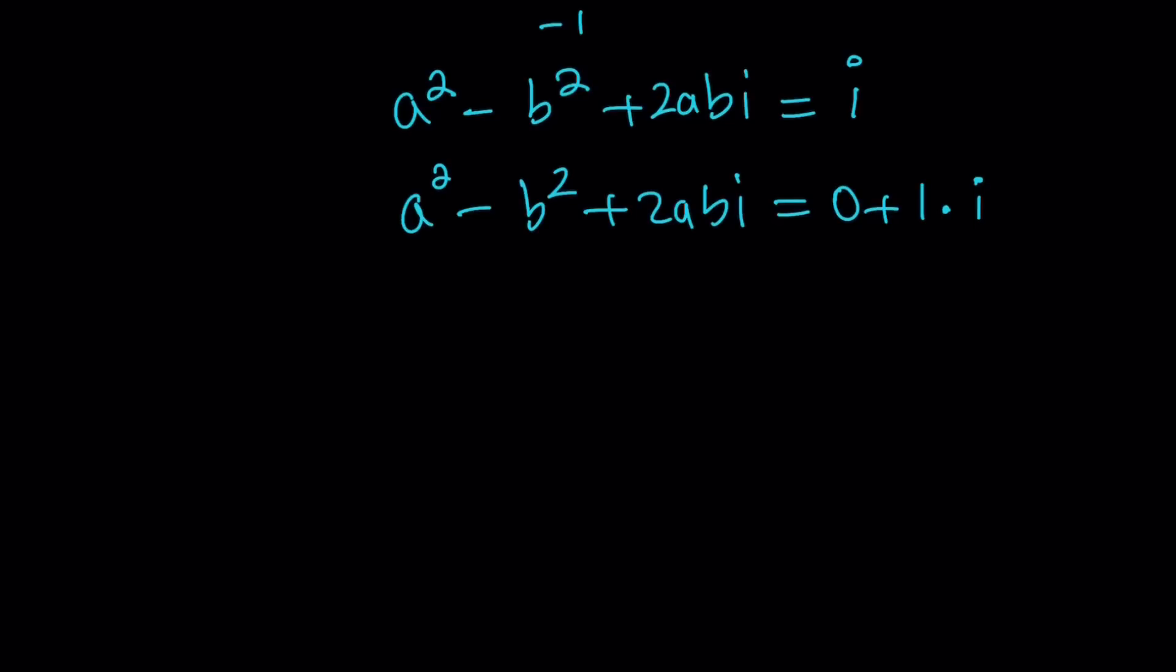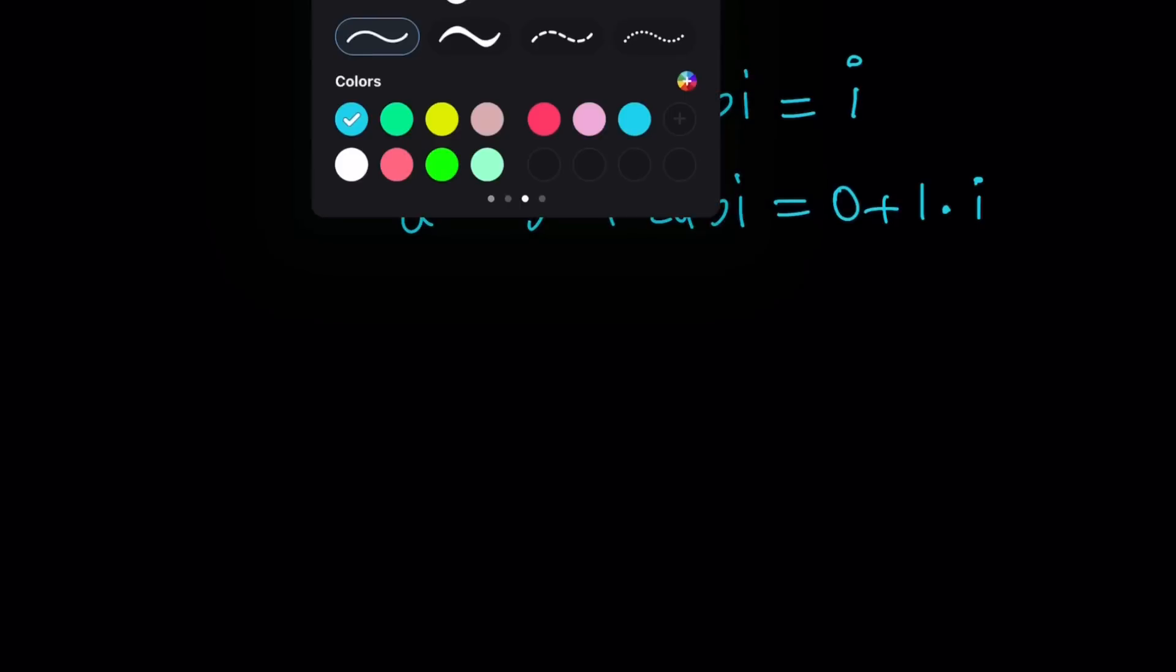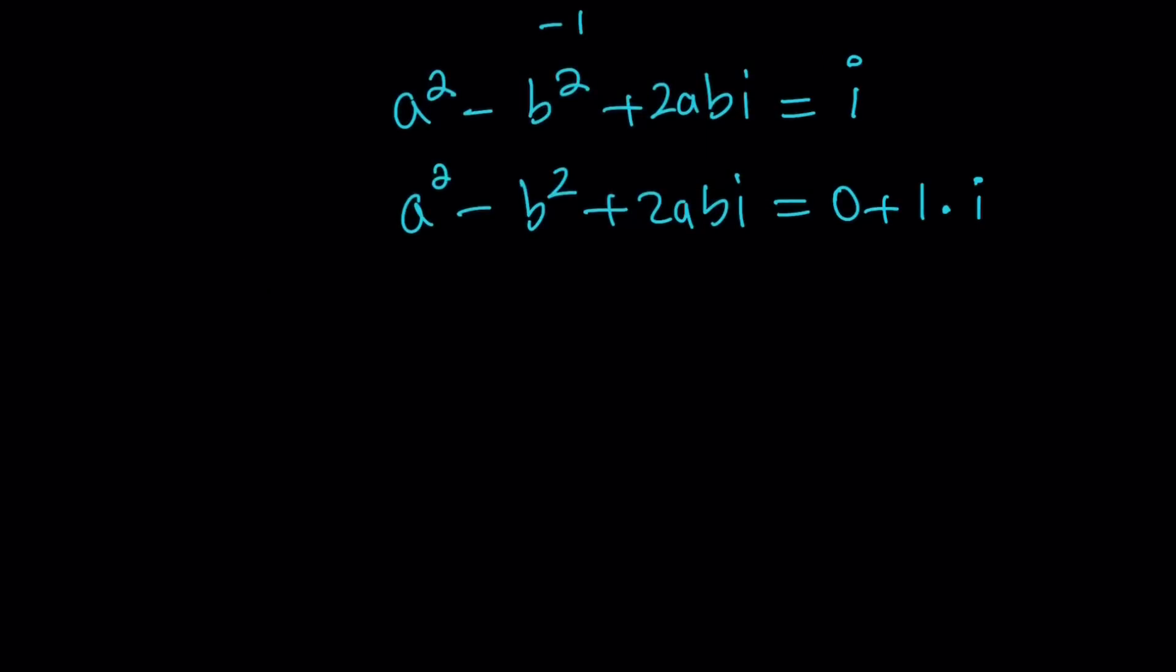It only has an imaginary part. But having compared these two numbers, we do know that if two complex numbers are equal, if they're identical, then the real parts have to equal each other and their imaginary parts have to equal each other. In other words, this is supposed to equal 0 and this is supposed to equal 1. You're going to be careful. When we say imaginary part of a complex number, we do not include the i in it. It's always a real number.